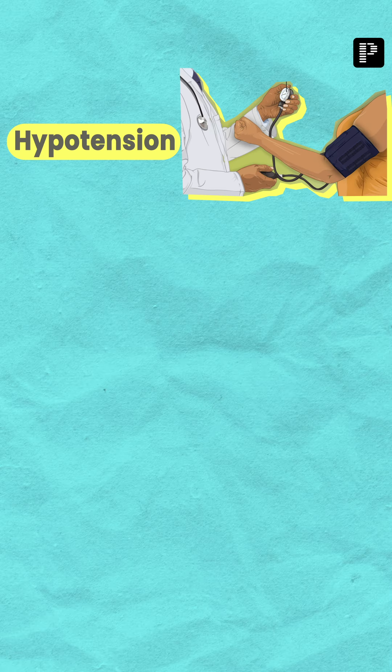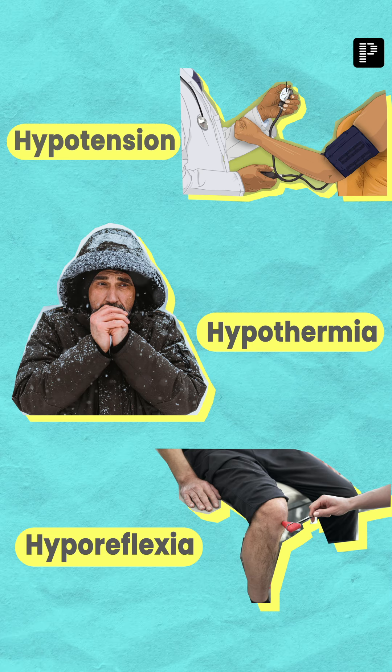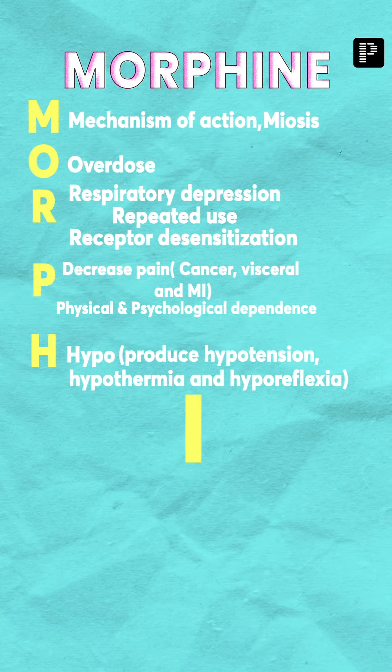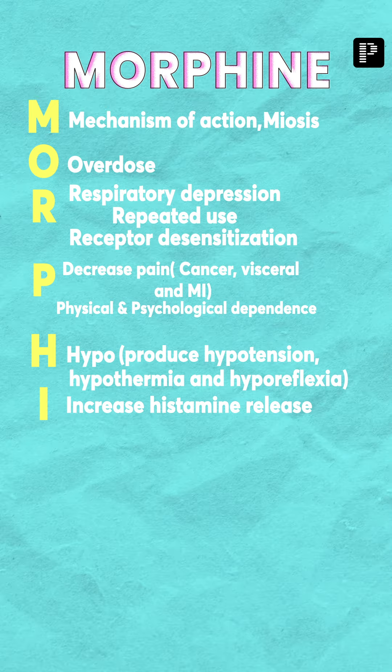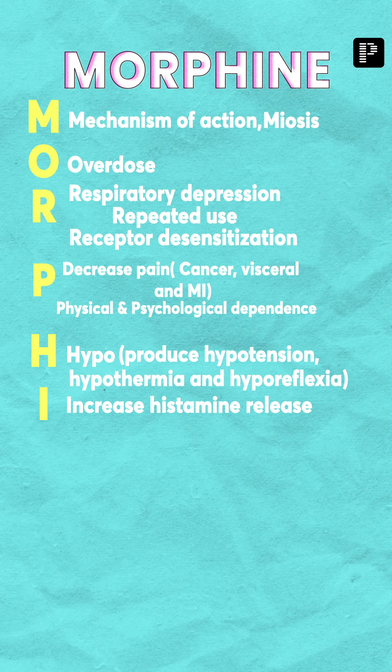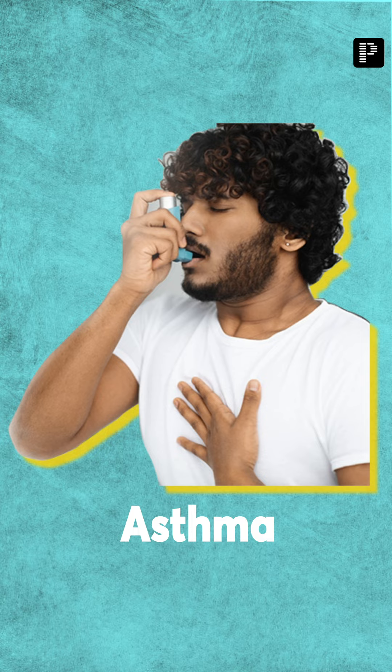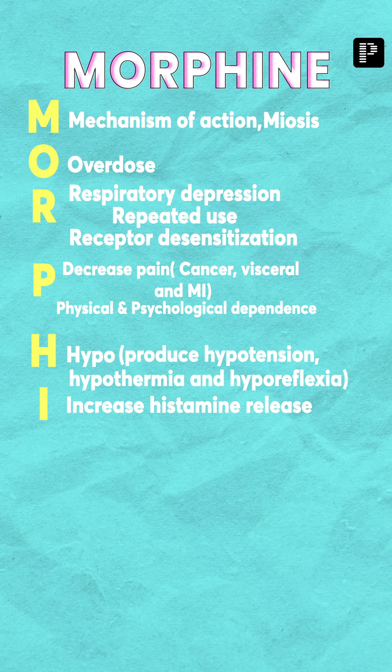The next letter is I — I stands for increased histamine release. The problem with increased histamine release is it can cause bronchoconstriction, which is a contraindication in certain patients. However, one advantage of histamine release is vasodilation — specifically venodilation — which can shift blood from the pulmonary circulation to systemic circulation. That is why morphine is useful in the management of pulmonary edema.